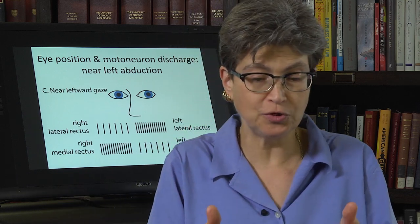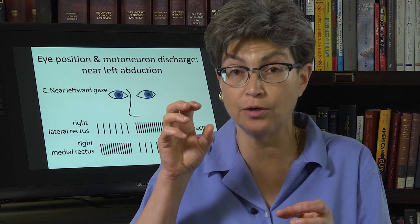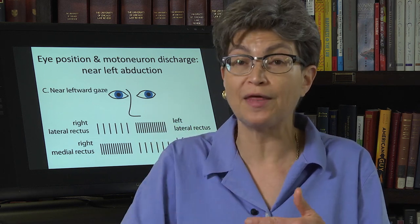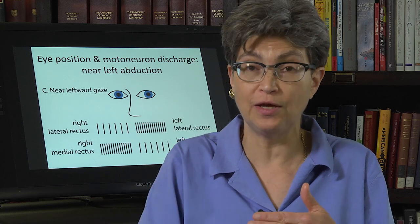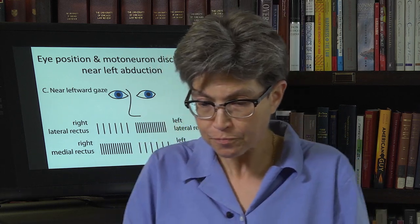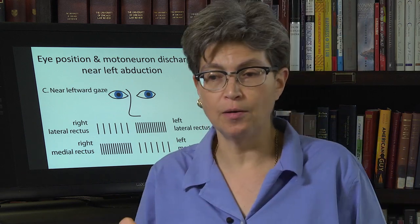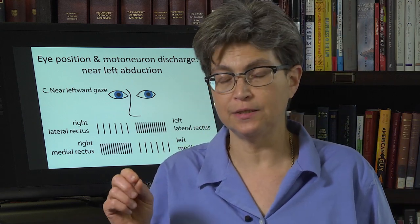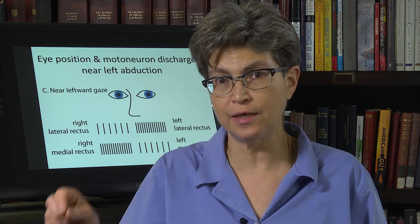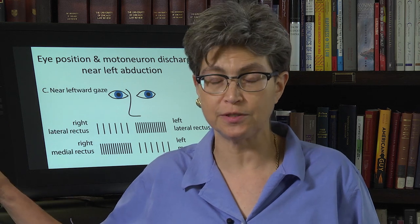We create our eye position with active activity in the motor neurons that are innervating the muscles. There are some other differences between the motor neurons and extraocular muscles compared to their body equivalents — let's say the biceps, for one.